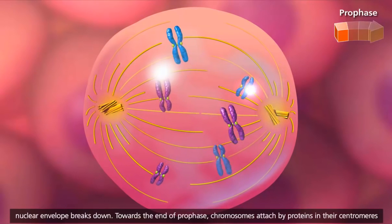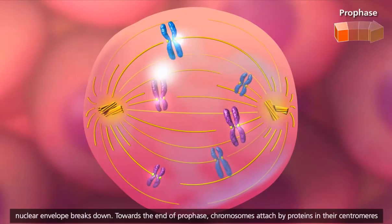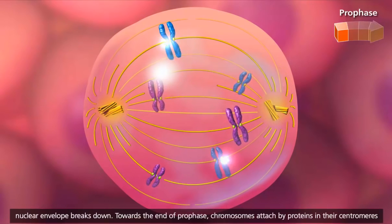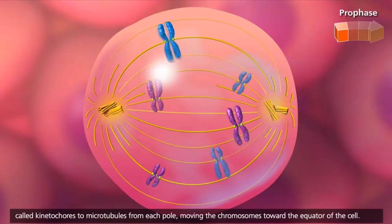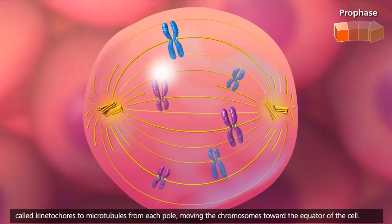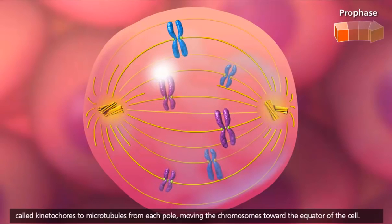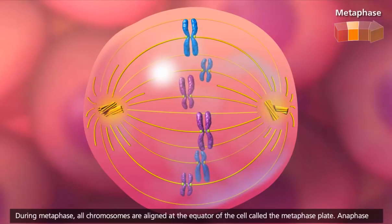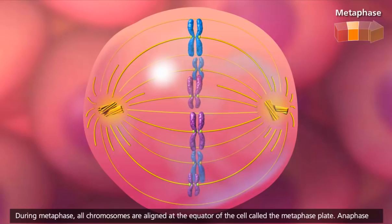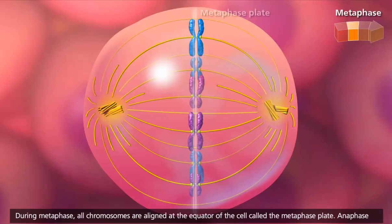Towards the end of prophase, chromosomes attach by proteins in their centromeres called kinetochores to microtubules from each pole, moving the chromosomes toward the equator of the cell. During metaphase, all chromosomes are aligned at the equator of the cell, called the metaphase plate.